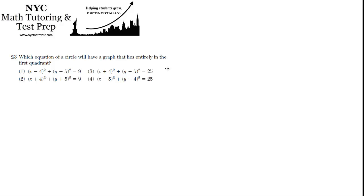Problem 23: Which equation of a circle will have a graph that lies entirely in the first quadrant? In order for a circle to lie entirely in the first quadrant, its center should certainly be in the first quadrant, and its radius should be small enough that it doesn't extend outward from that center into the other quadrants.